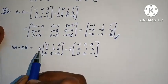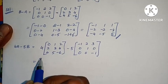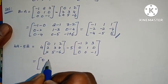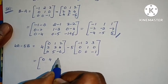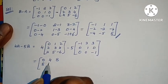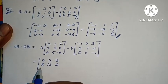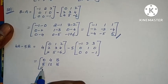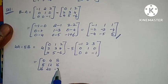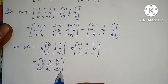Now 4A minus 5B. First compute 4A: 4 into 0 is 0, 4 into 1 is 4, 4 into 2 is 8, 4 into 3 is 12, 4 into 4 is 16, 4 into 5 is 20, 4 into 6 is 24. Minus 24.